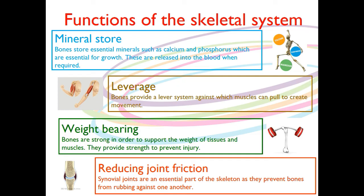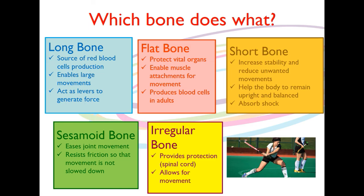Now, what we need to think about from the last podcast is which bones are involved in which of those different functions. This could be an extended question in the exams where you may be asked about the functions and then asked to relate them to the bone types. The long bones are the source of red blood cell production. They enable large movements and they act as levers to generate force — so there are three different things there for the long bones. Flat bones are mainly for protecting our vital organs.